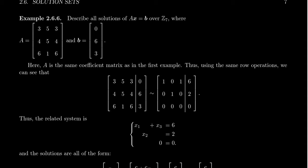So consider the matrix A that's 3 by 3 given right here: 3, 5, 3, 4, 5, 4, 6, 1, 6, and consider the linear equation Ax equals B, where B equals 0, 6, 3. This is actually the exact same coefficient matrix we used in a previous example, and recall that we're working mod 7 in this example here. So without going through all the details, if you augment the matrix A with the vector B right here,